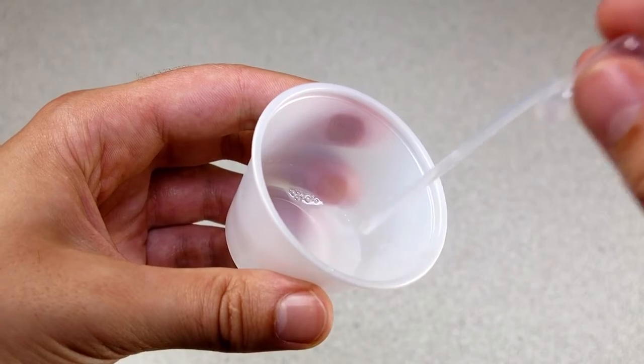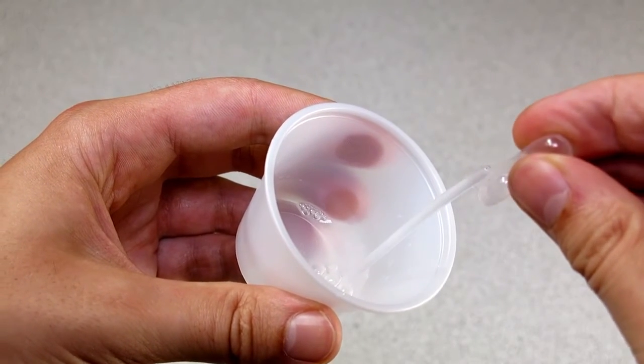Wait 30 minutes, then swirl your sample for 15 seconds and fill the pipette that's in the kit.